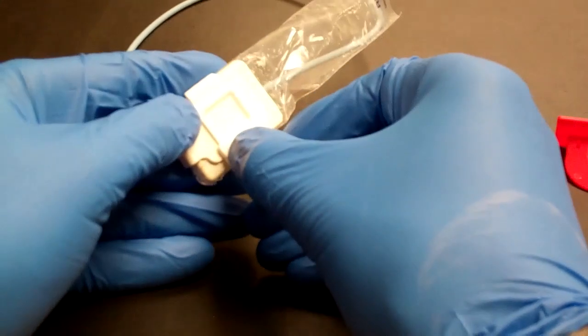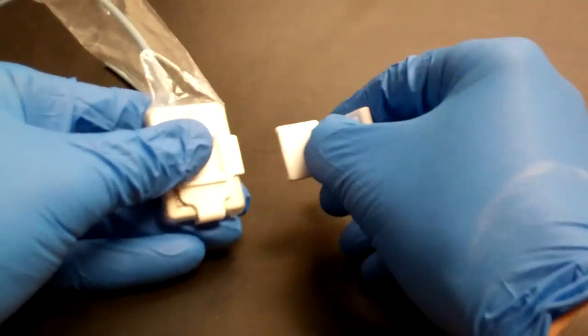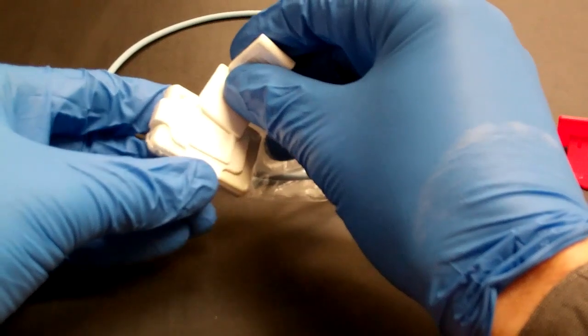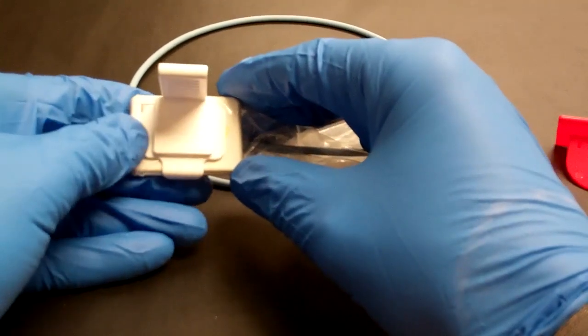For a posterior periapical, just attach it from the side. If you're changing quadrants, it's really quite easy. You just pull off that bite piece and attach it on the other side.